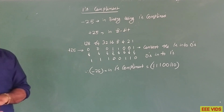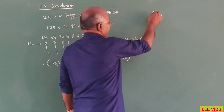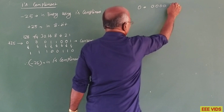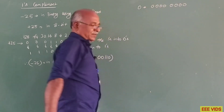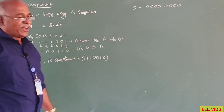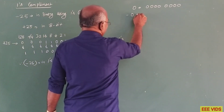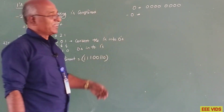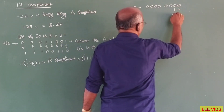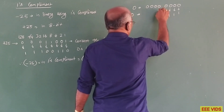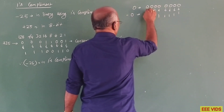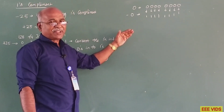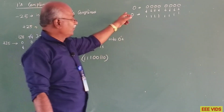Here, for example, we are representing 0. Zero in 8-bit binary is 0, 0, 0, 0, 0, 0, 0, 0. Now, negative 0 in 1's complement: 0 becomes 1, 1 becomes 0. So if we invert all bits, we get 1, 1, 1, 1, 1, 1, 1, 1. That means minus 0 is represented as all 1s.